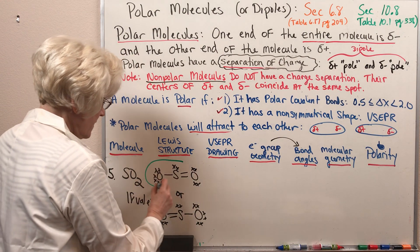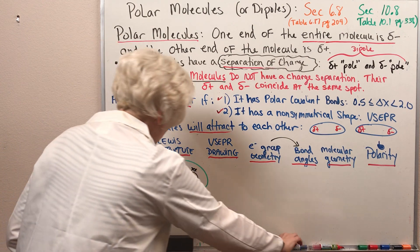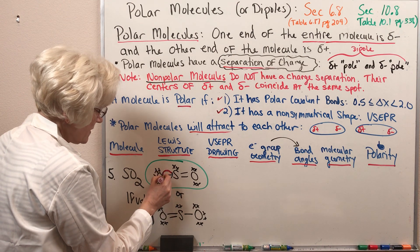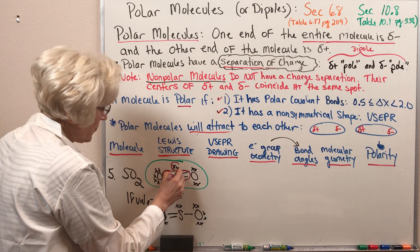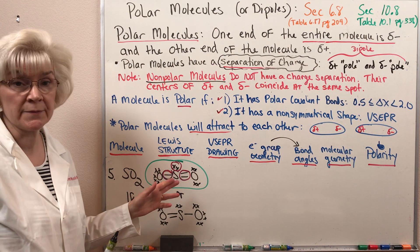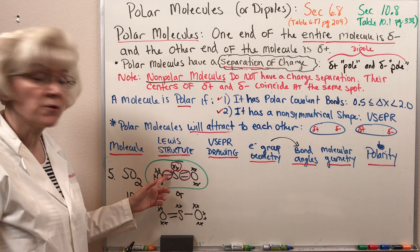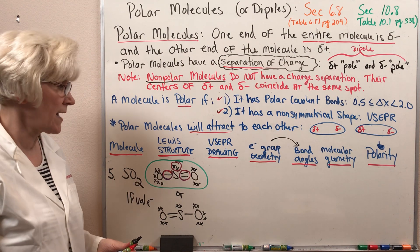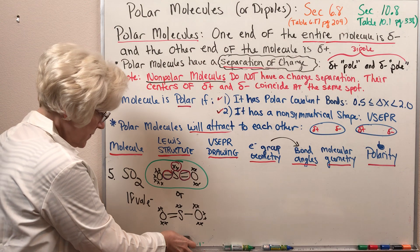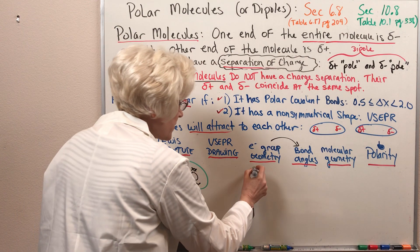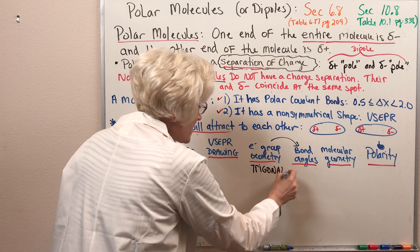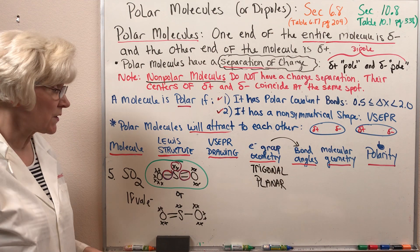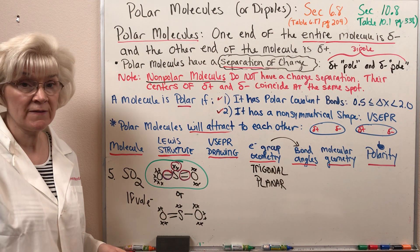Looking at one resonance structure for sulfur dioxide, I see that I have one, two, three electron groups around the sulfur atom. Remember that electron groups can either be single covalent bonds, multiple covalent bonds, or lone electron pairs, and we have all three of these present in the sulfur dioxide molecule.